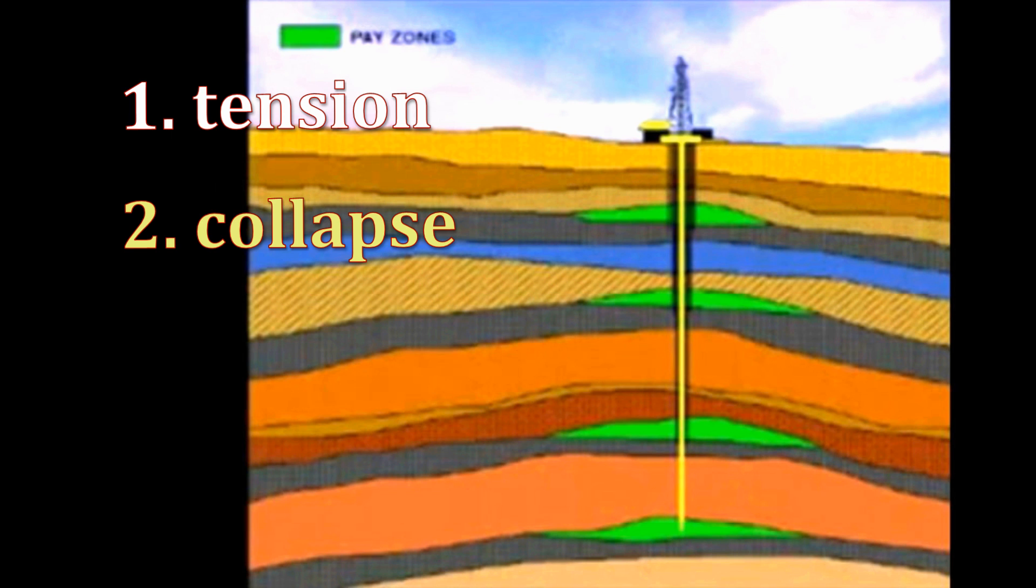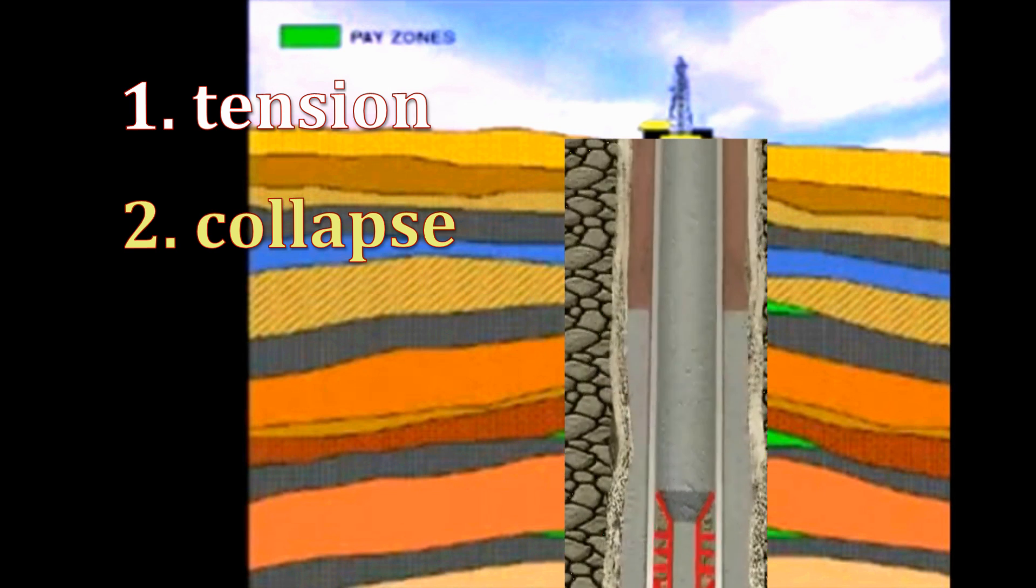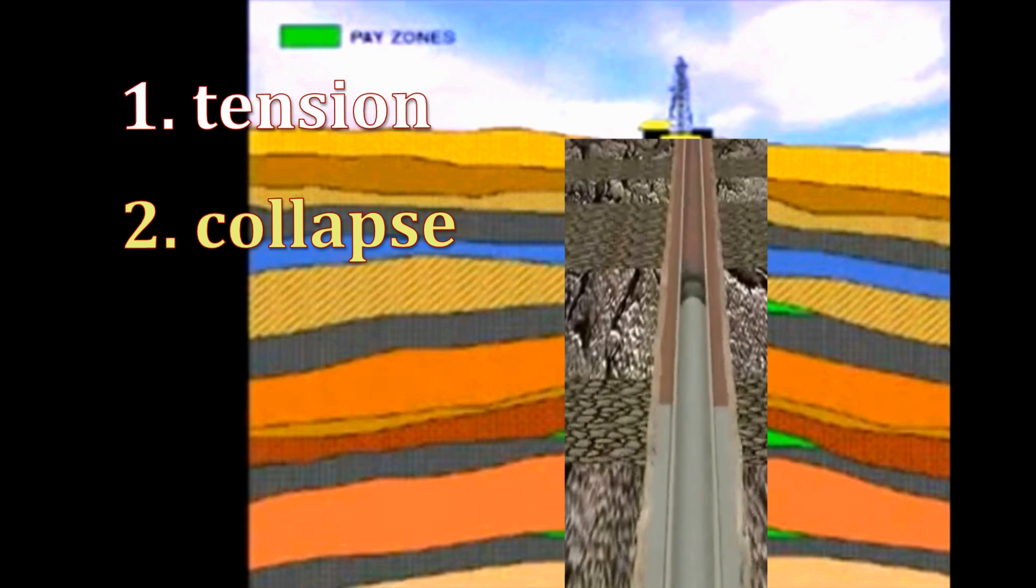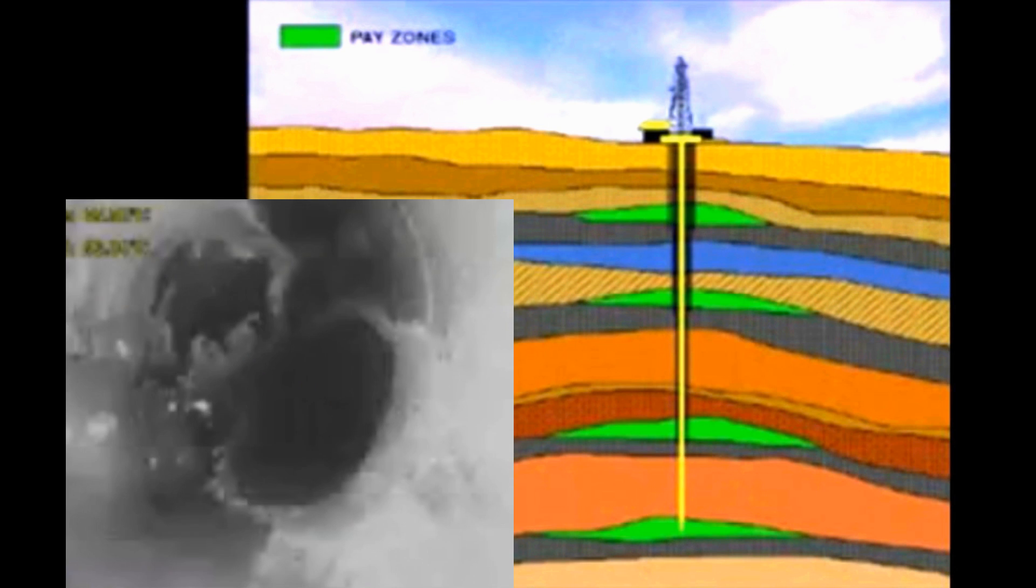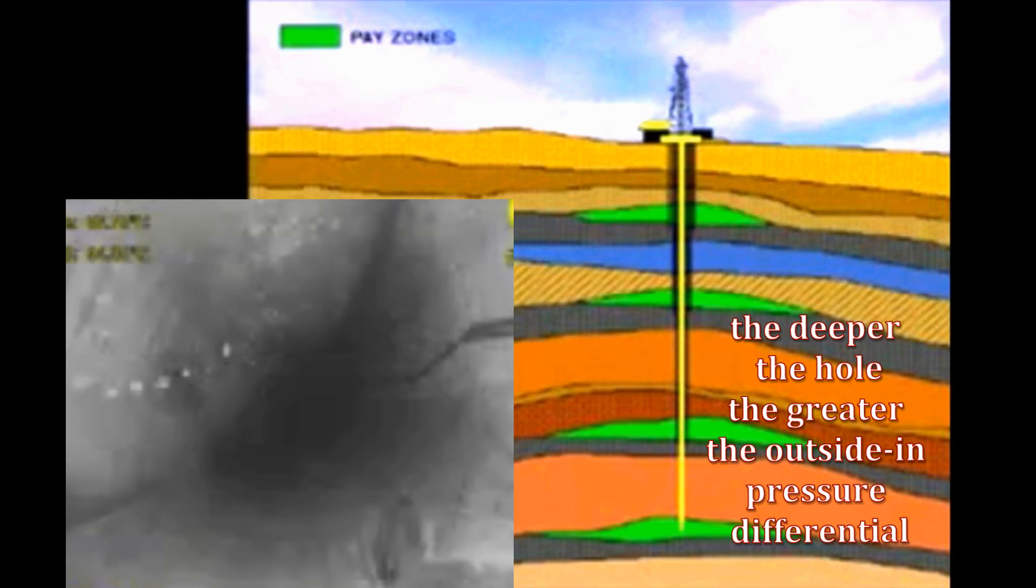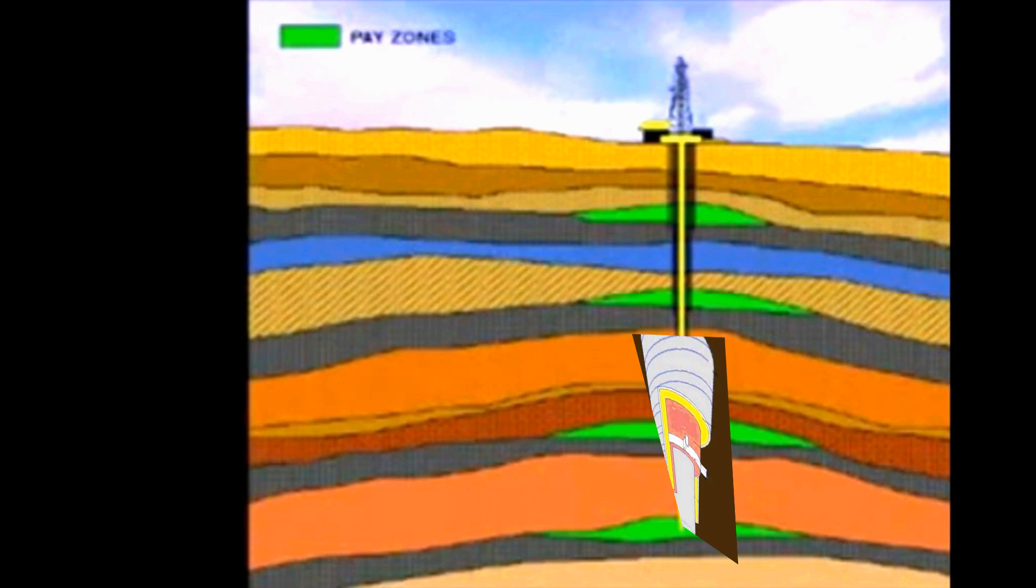The next is the danger of collapse. This danger is greatest when cement has just been circulated up the outside of the casing because the cement is much heavier than the mud that is inside it. The deeper the hole, the greater the outside-in pressure differential is. Strengthening for collapse is usually done at the bottom of the hole with a higher grade of casing.